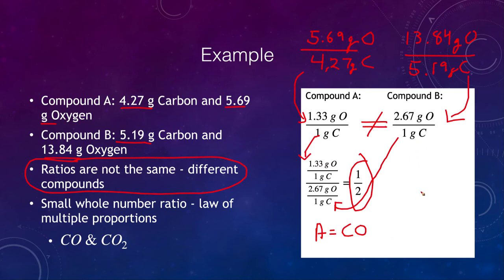For this one, we have a lot more oxygen. So compound B is carbon dioxide. So they are two very different compounds, as we saw, because the ratios were not the same. But there is still a very distinct ratio between the two. And we see in this case that it is that one has twice as much oxygen as the other.